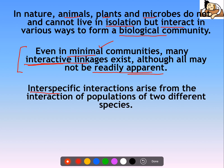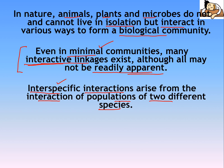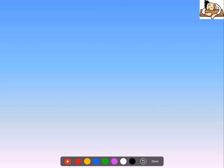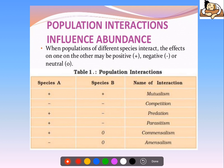Inter-specific interactions — what are they basically? Two different species' interactions arise from the interactions of populations of two different species. These interactions can be beneficial, they can be detrimental, or neutral — that is, neither harm nor benefit to one or both of the species. If it is beneficial to both, it is mutualism.